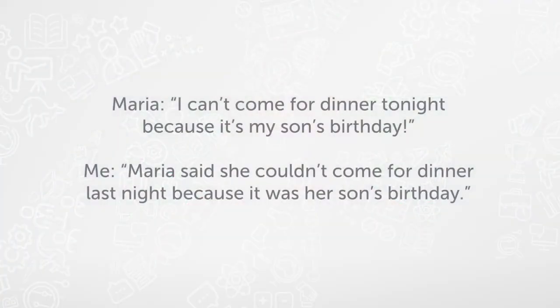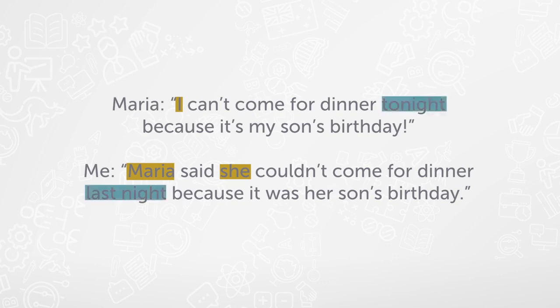We said earlier that it's important we retell stories from our own perspective, thinking about what has changed from the original situation to our situation now. So let's look at all the words I need to change to make sure my sentence retells what Maria said properly. I changed "I" to "Maria," "can't" to "couldn't," "tonight" to "last night," "it is" to "it was," and "my son's" to "her son's." Lots of changes!